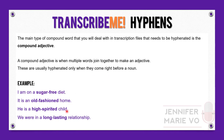Here are examples of compound adjectives: "I am on a sugar-free diet" — diet is a noun, and sugar-free is the compound adjective. "It is an old-fashioned home." "He is a high-spirited child." "We were in a long-lasting relationship." All of these are compound adjectives because when you mix the words together, they make an adjective. If you're ever confused about whether something is a compound adjective, just type it in Google — for example, type in "common compound adjectives" or the two words you're confused about.